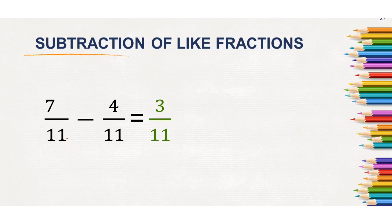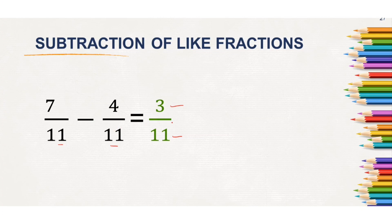Look at another example. Here also the denominators are the same, which means it is like fractions. We have to take away 4 from 7 — 7 minus 4 will be 3. As the denominators are the same, it will remain the same. So, 7 by 11 minus 4 by 11 will be 3 by 11. This is how we subtract like fractions.